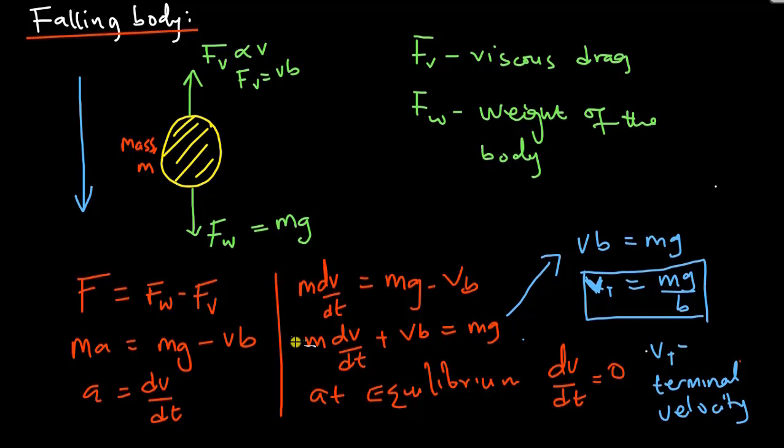So let's solve this differential equation. I have M dv/dt plus Vb equals Mg.